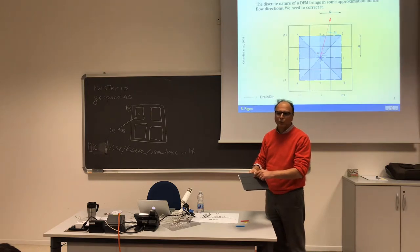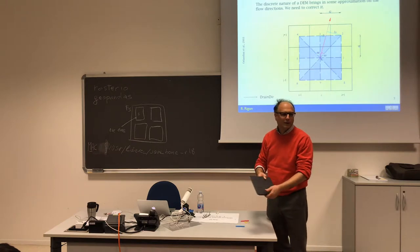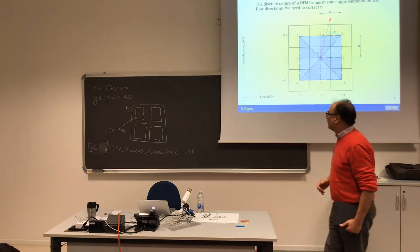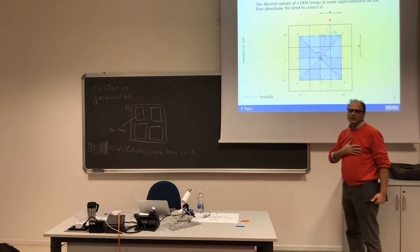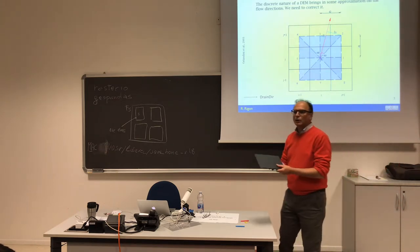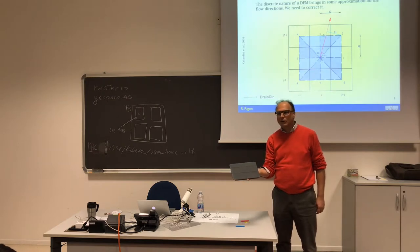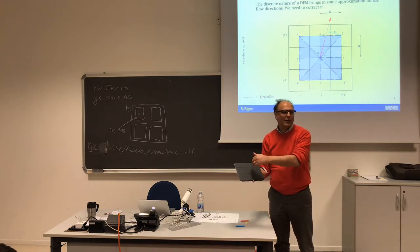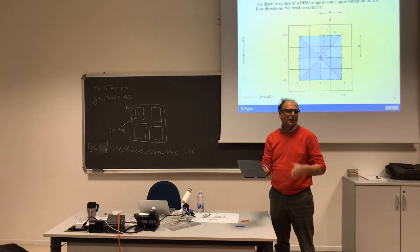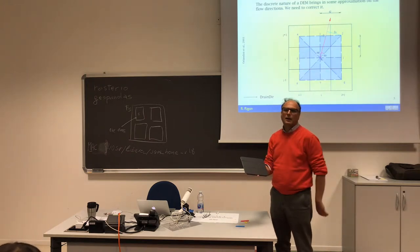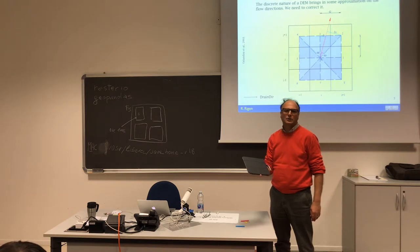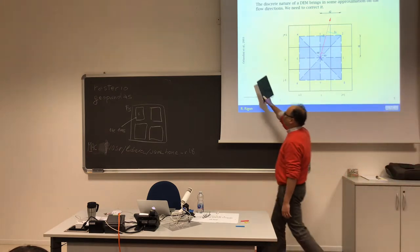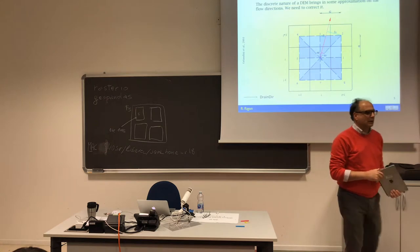You can make an error which is as much as 22.5 degree of error. So you can start going to Rome and actually you go in the middle of the Mediterranean Sea, for instance. If you just consider the D8 direction and your topography is pretty planar and oriented in the wrong direction with respect to the grids that you are choosing, you can have an error on the flow directions.